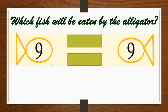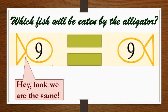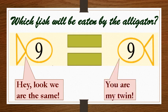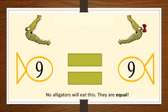Let's see what is served at lunch time. Something strange. The fishes are conversing. Fish on the left says, Hey, look, we are the same. Fish on the right says, You are my twin. Now, the question is, Which fish will be eaten by the alligator? No alligators will eat this as they are equal.